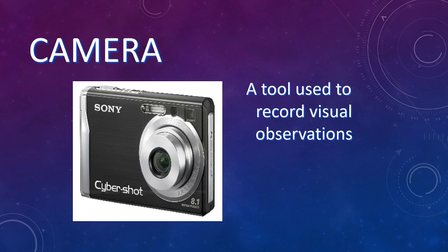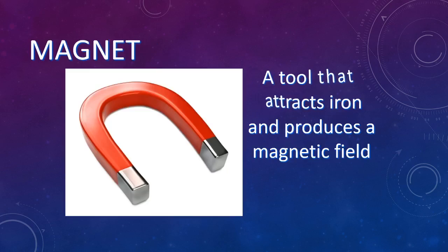A camera might be used to do some type of visual observation and record keeping, whether that's pictures or video. A magnet is used to attract items and produce a magnetic field — it's only going to attract magnetic items, so most metals.